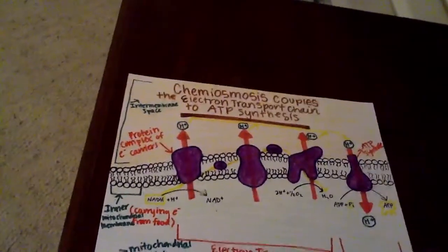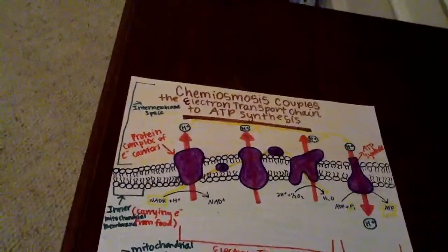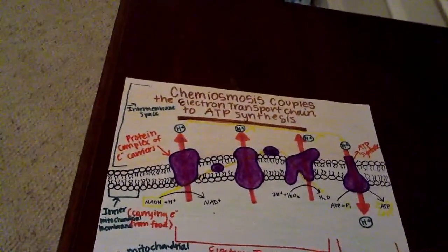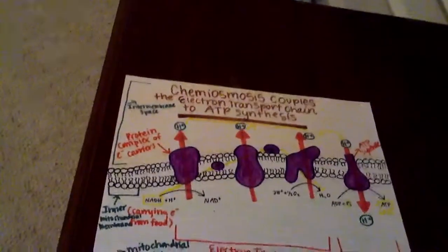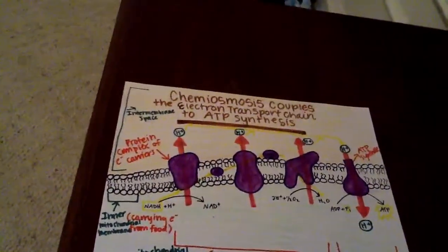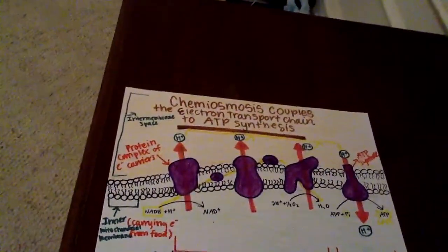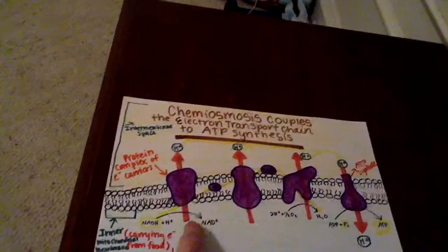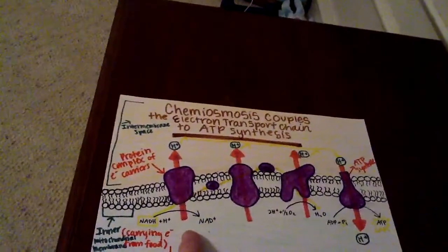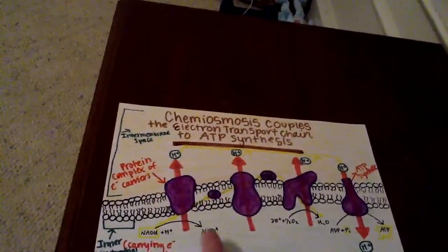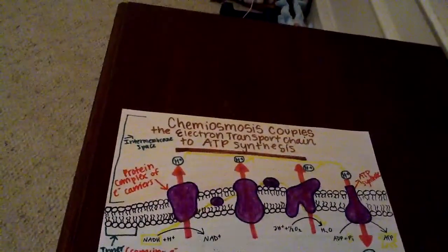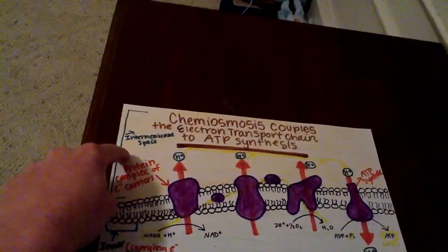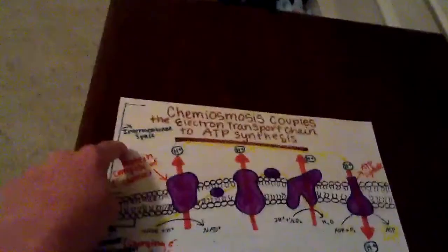As each complex of the chain accepts and then donates electrons, it pumps hydrogen ions — protons — from the mitochondrial matrix into the intermembrane space. You can see here they start down in the mitochondrial matrix and are pumped up into the intermembrane space.